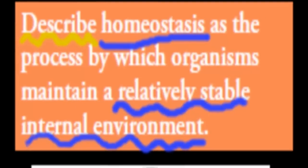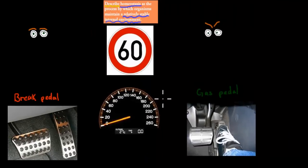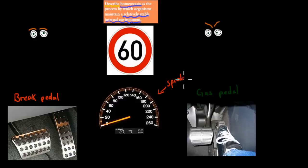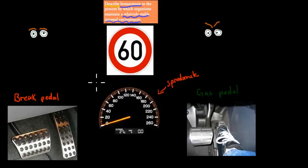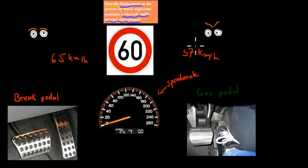Before I start, I'll give a quick analogy. What you have here is a person driving a car. There's a speedometer, and he's told to maintain at roughly 60 kilometers per hour. But when anyone's driving, it's hard to maintain that exact value of 60 kilometers per hour. Sometimes it's going to be at 57 kilometers per hour, sometimes it's going to be at 65 kilometers per hour, and the way you can keep it at exactly 60 is by using the brake and the gas pedal.